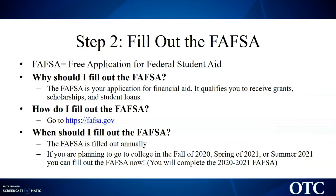After you have created your FSA ID, the next step is to fill out the FAFSA. FAFSA stands for Free Application for Federal Student Aid, and as I mentioned previously, the FAFSA is your application for financial aid — it qualifies you to receive grants, scholarships, and student loans. The website to fill out the FAFSA is fafsa.gov. Make sure you are on the right website — not fafsa.com or fafsa.org — make sure it is fafsa.gov.